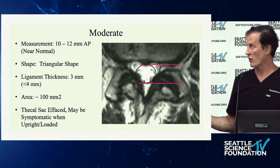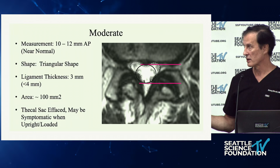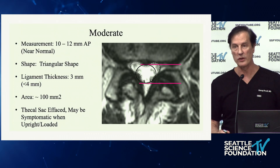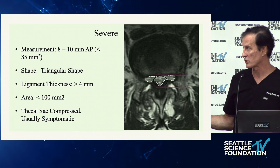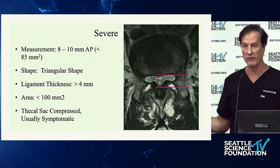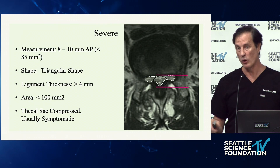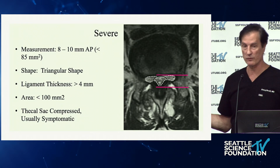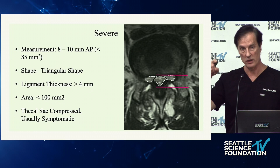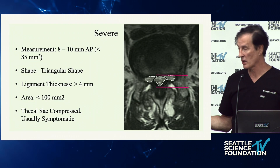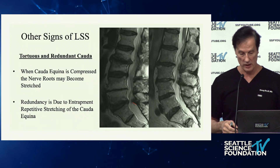Moderate stenosis: about 10 to 12 millimeters front to back, shape goes from round to triangular — some call this a trefoil shape. The ligamentum flavum is no longer thin and gracile; it starts to thicken to about 3 millimeters. By the time you get to severe, it's really triangular. Sometimes you have secondary signs because when this person stands up, the remaining CSF is going to go away. You can actually see this on an upright MRI — a great demonstration of that.